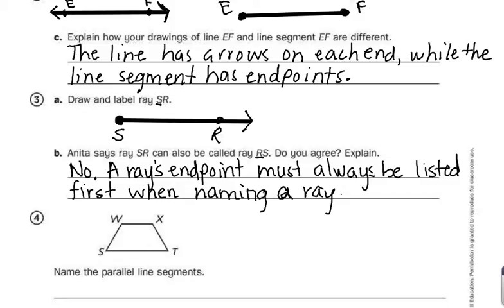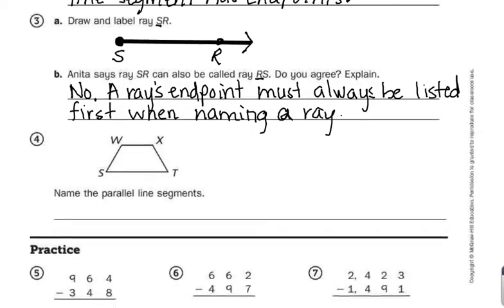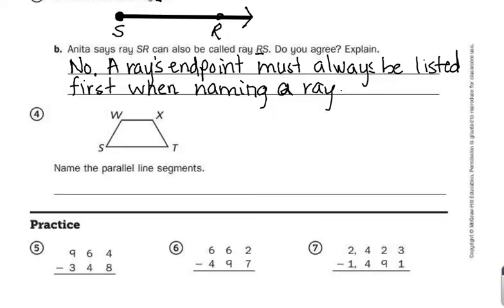Number four, here we have a trapezoid. Looking at this, it says name the parallel line segments.